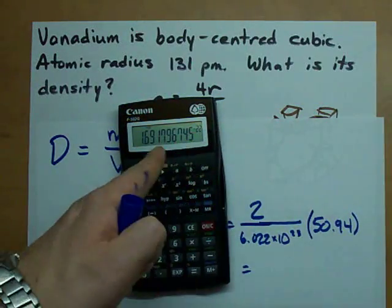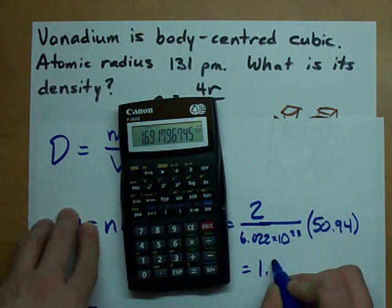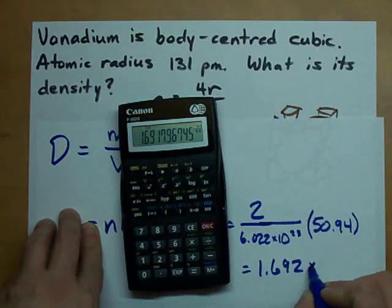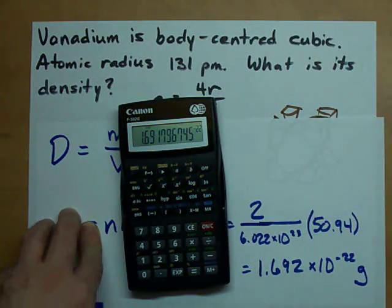Apparently exactly 2 atoms of vanadium weigh 1.692 times 10 to the minus 22 grams.